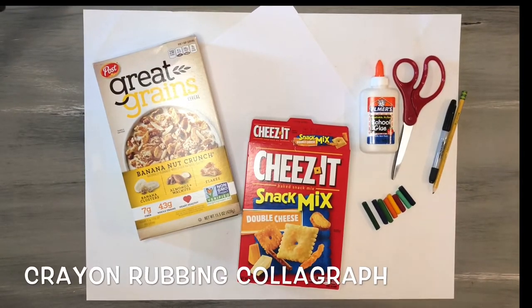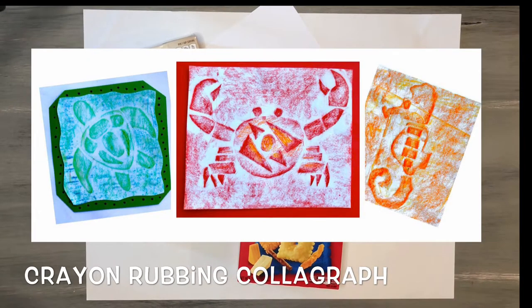This lesson is about creating crayon rubbing calligraphs. A calligraph is a type of printmaking where materials are built up onto a surface and then printed. We are going to be building up our surface using cardboard pieces and printing using a crayon rubbing method that's going to help transfer our image onto our sheet of paper.